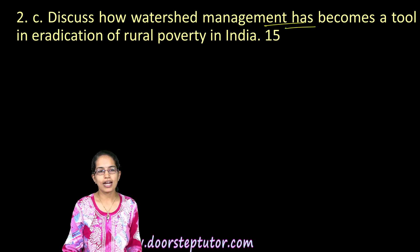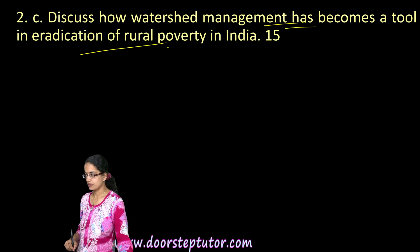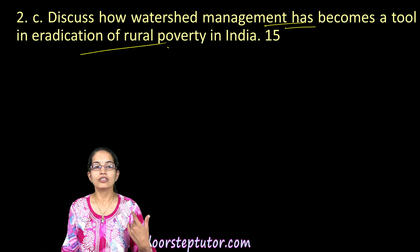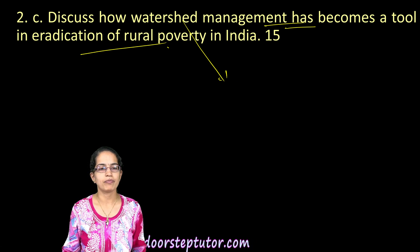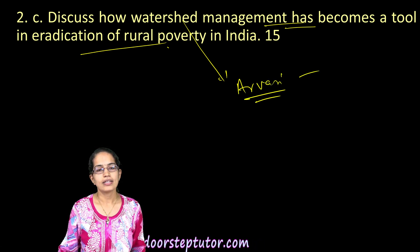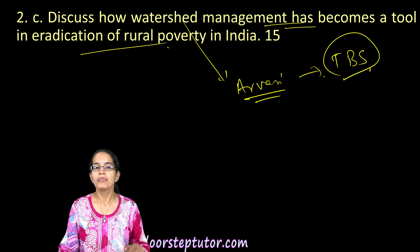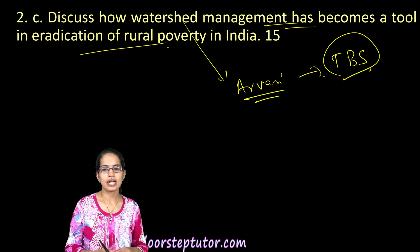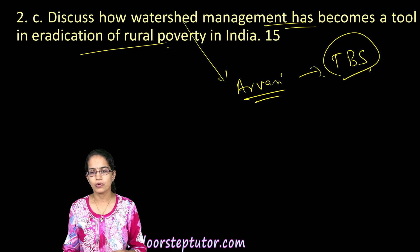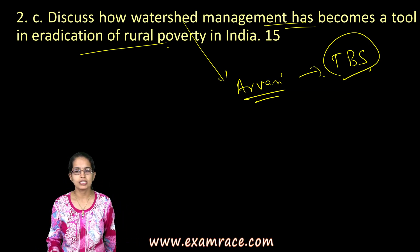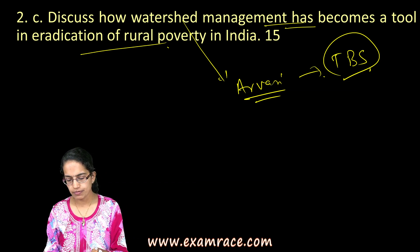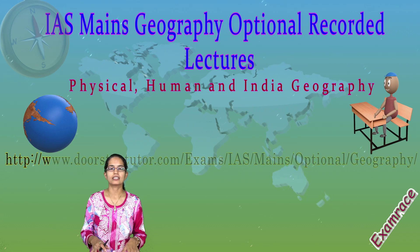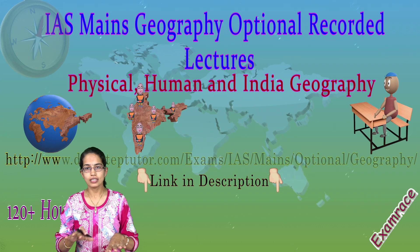The next question is on watershed management and how it helps in the eradication of rural poverty. Under programs like MGNREGA, a minimum of 100 days of guaranteed employment is provided, through which many watershed management projects have been built. The Tarun Bharat Sangh (TBS) has been a unique effort here. Through joint forest management systems, conservation of small rivulets using scientific methods and remote sensing techniques, detailed satellite imagery helps ensure minimum runoff and effective water conservation.